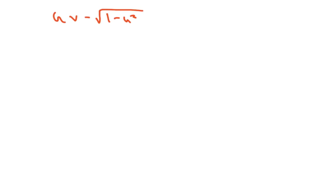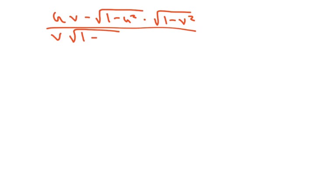Our final answer is: uv minus √(1 - u²)(1 - v²), all over v · √(1 - u²) plus u · √(1 - v²). And that's just algebra. Thank you, have a nice day — we're going to do one more of these.